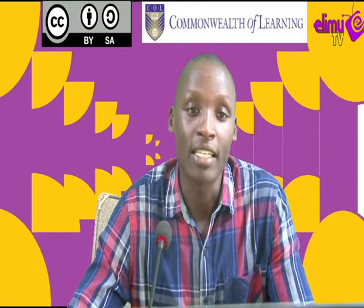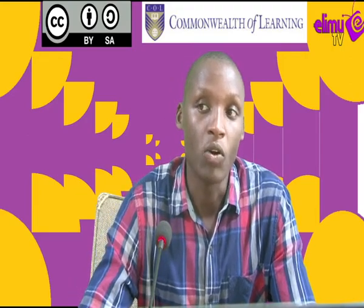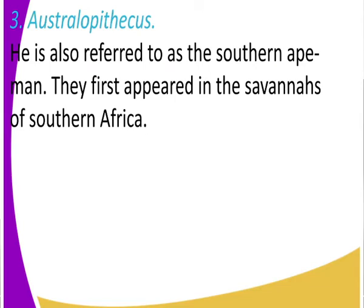In today's class we are going to look at Australopithecus. By the end of the lesson, we need to state the characteristics of Australopithecus and also where it was first discovered. That is how we'll be understanding the stages of development — first, where it was discovered, and also the features of that stage.